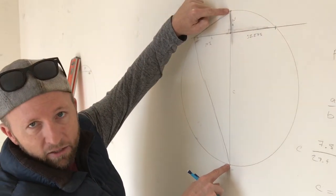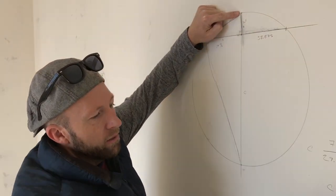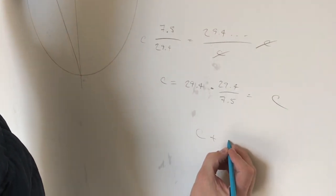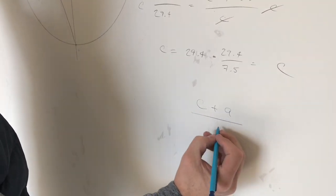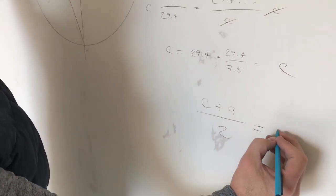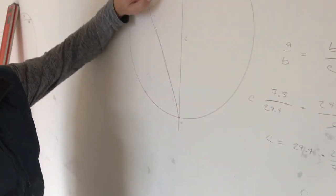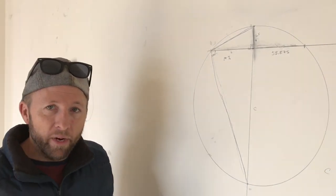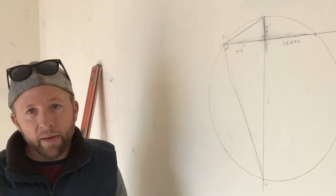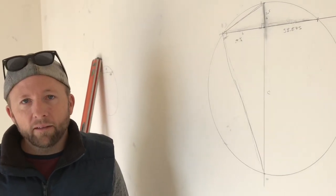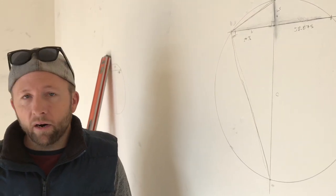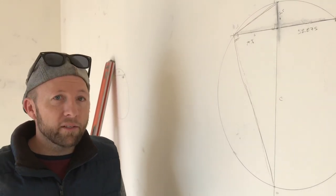Once you get c, that's the distance between here and here. You're going to want to add a to it, and that will give you the entire diameter of that circle. So you'd go c plus a and you divide that by two to find the radius.